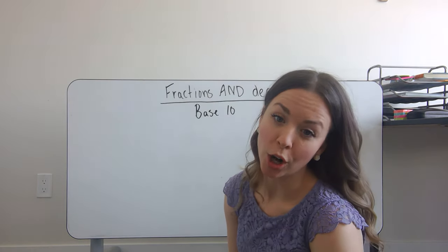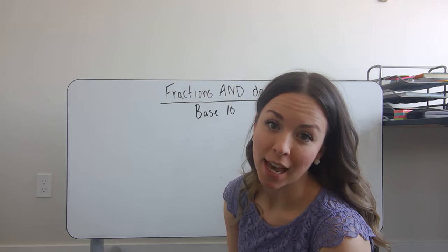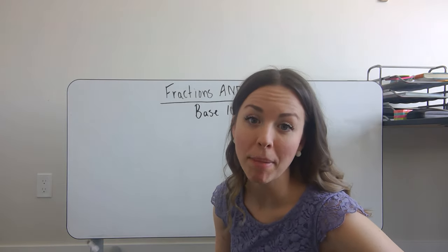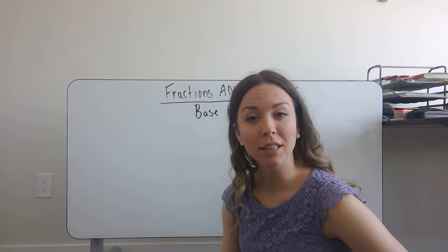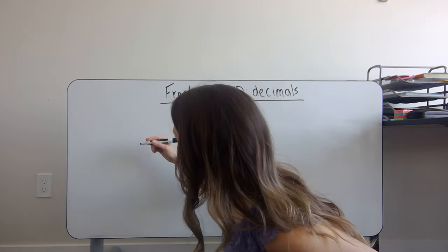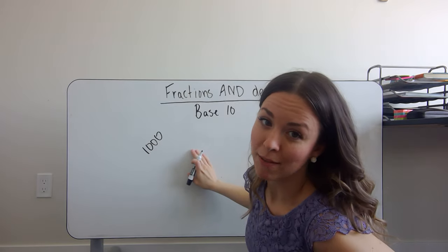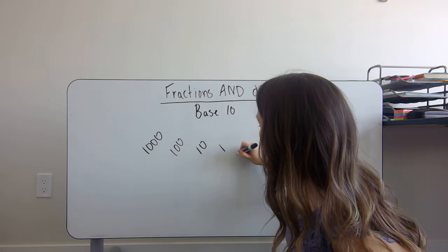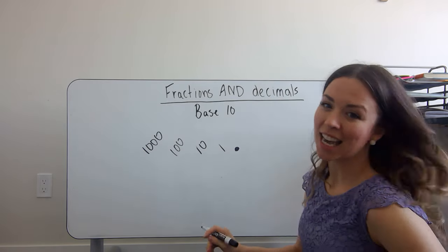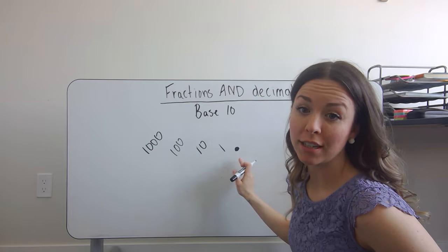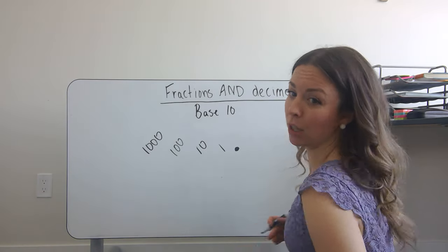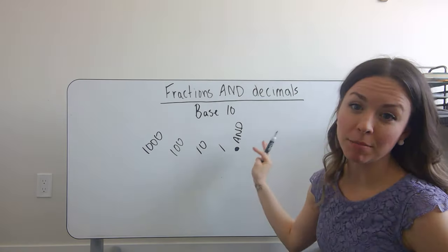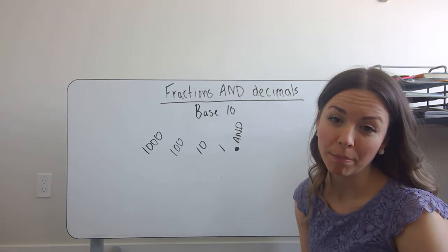We've talked about the base 10 model before — when we multiply by a number that is a 10, a 100, a 1,000, a 10,000 — when we're using powers of 10. So when we're talking about place value, let's start from the thousands place. We have our thousands, hundreds, tens, and ones places. How we represent that a number is less than a whole is by using our decimal, and we call it 'and.' We can represent the decimal place values using a fraction because that represents a piece or part of a whole.